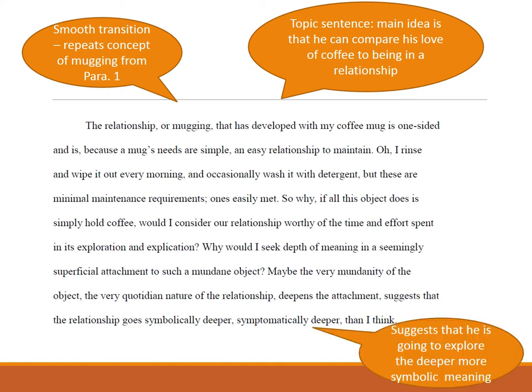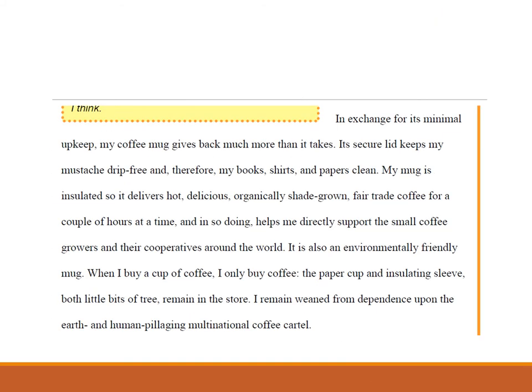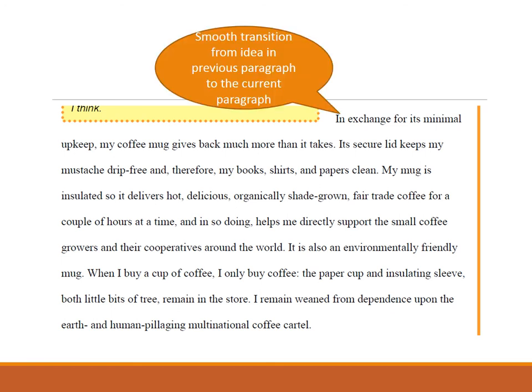Later on, he closes the paragraph saying maybe the very mundanity — the very boringness, everyday use of the object — 'the very quotidian nature of the relationship deepens the attachment, suggests that the relationship goes symbolically deeper, symptomatically deeper than I think.' So he's saying there's something more to this coffee mug that he's going to explore. He's going to look at the abstractness of it — not just describing what it looks like, but describing what it means. Then he transitions: 'in exchange for its minimal upkeep' — echoing from the previous paragraph how it's easy to take care of — leading into the new idea: 'my coffee mug gives back much more than it takes,' and he's going to describe what it adds to his life and its meaning.